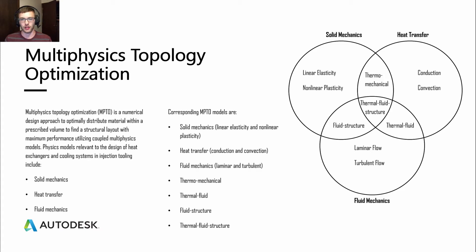They all have their sub-branches within them, like linear elasticity or non-linear plasticity for solid mechanics. But then they also have their coupled models between them. This is where it actually gets to multi-physics: thermal mechanical, thermal fluid, fluid structure, and thermal fluid structure. We will be mainly dealing with the thermal fluid multi-physics topology optimization models.